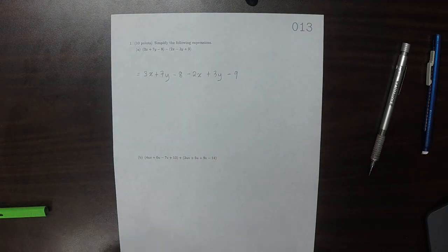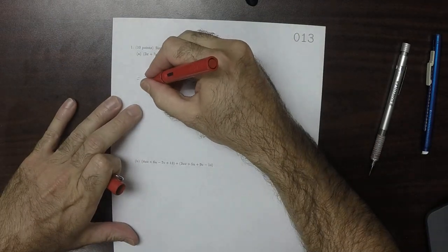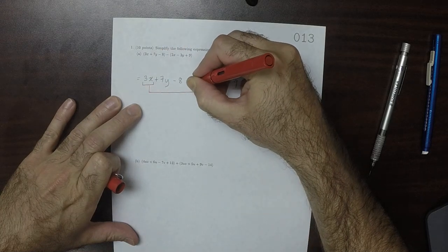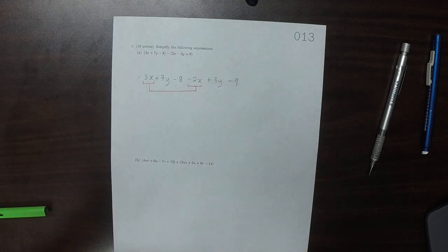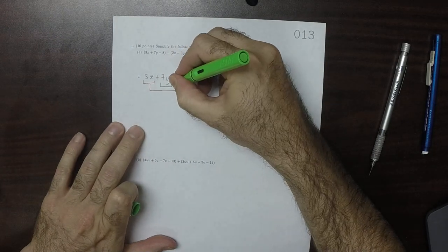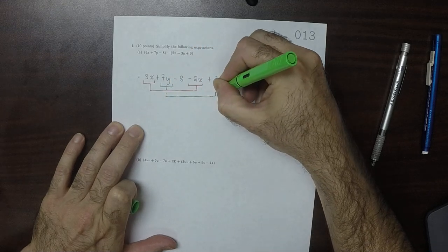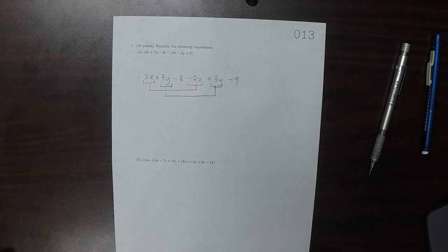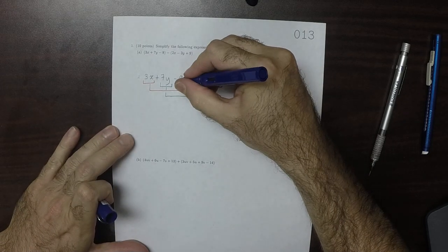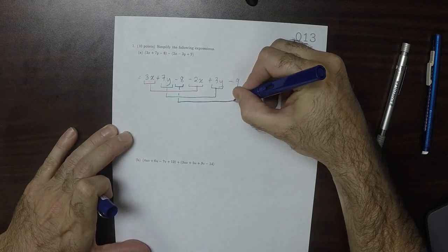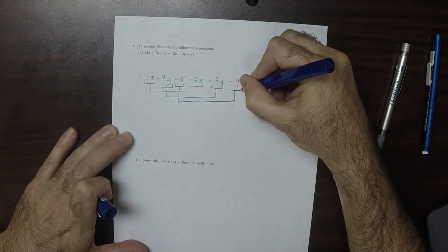So now we'll make groups. The x's are alike. The y's are alike. And the constants are alike.